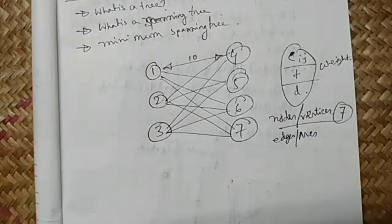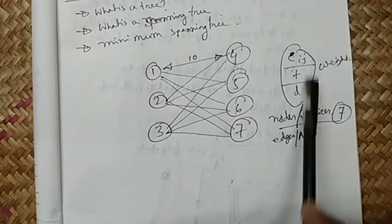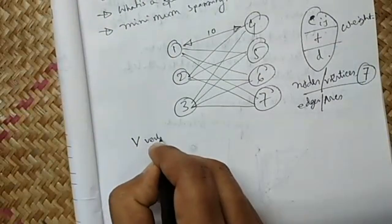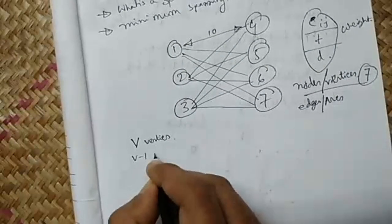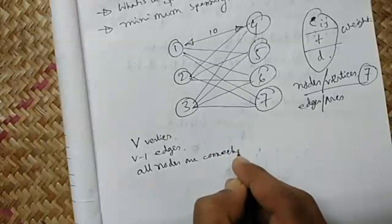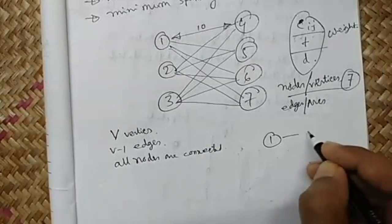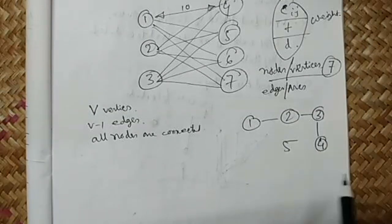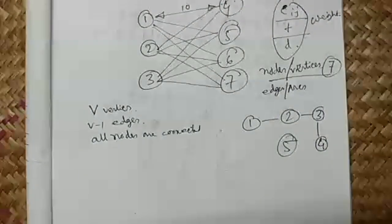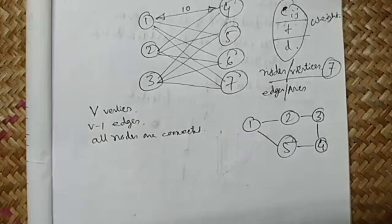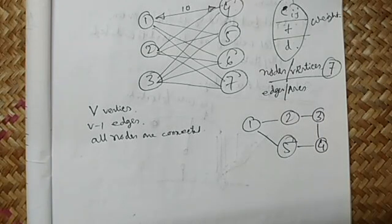For a graph or network model to be a tree, the number of vertices must be v, the number of edges must be v-1, and all nodes must be connected. For example, if one, two, three, four are connected but five is not connected, it will not be a tree. Also, if a cycle forms — such as five nodes and five edges — it is not a tree.